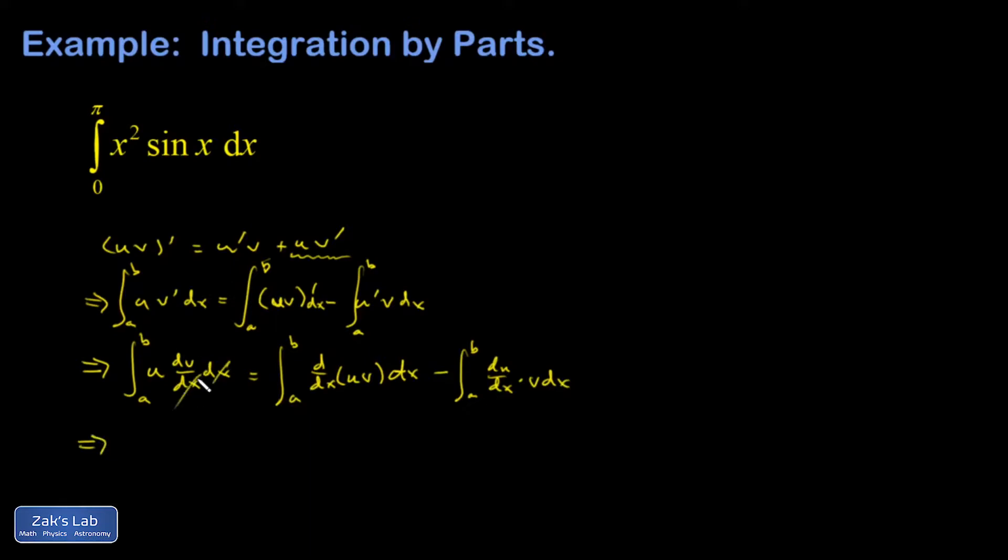Okay, those dx's cancel, and I end up with the definite integral from a to b of u dv. So we're going to identify a u that becomes simpler when we differentiate it so that this leftover integral is easier than the one we started with.